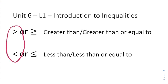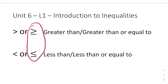If the arrow points to the right, the inequality sign points to the right, that is a greater than. If the inequality points to the left, that is a less than. If there is a line underneath your inequality symbol, then that means or equal to.